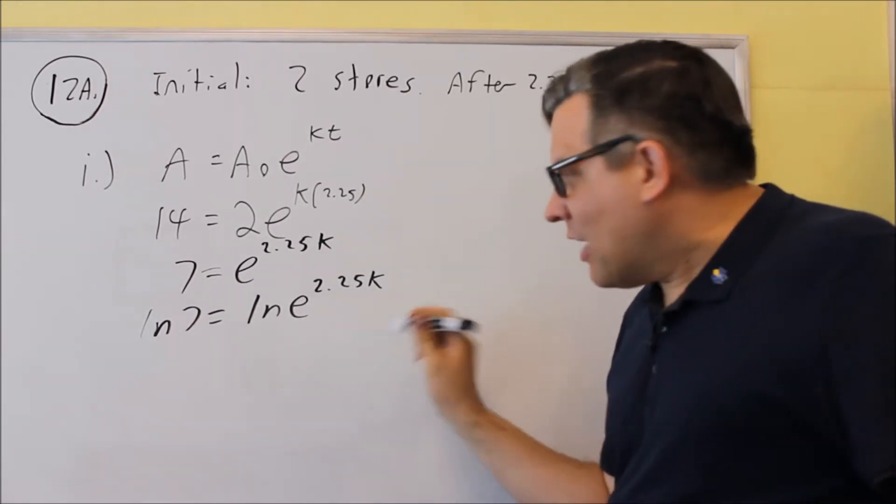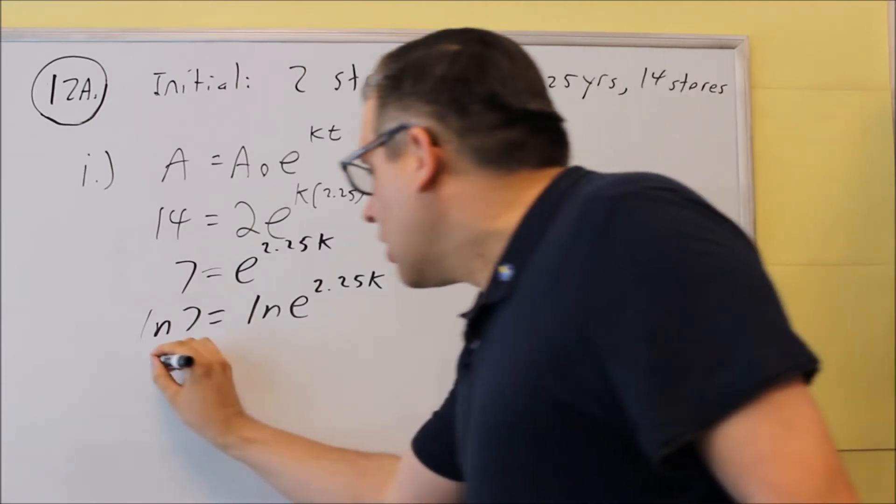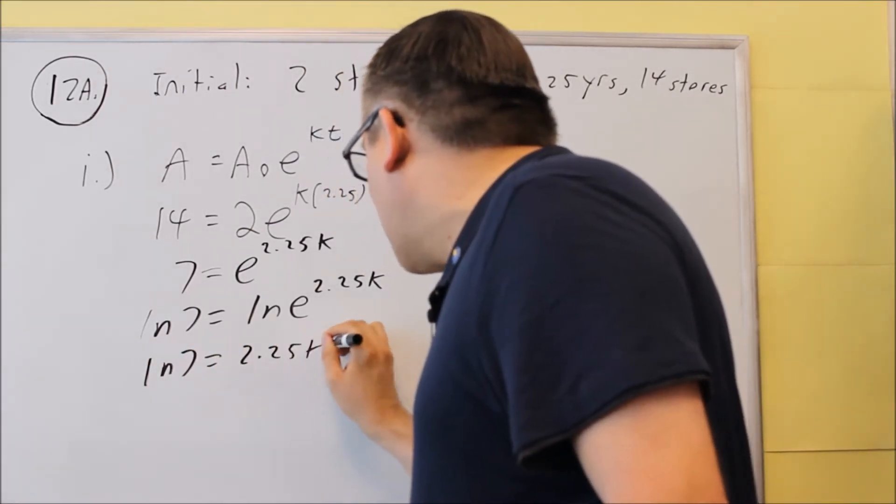both of that's going to cancel, and you're just going to end up with the exponent. So we're going to get natural log of 7 equals 2.25k.